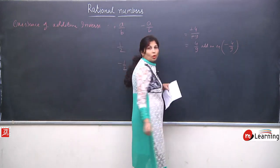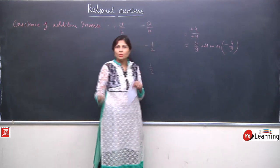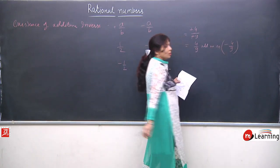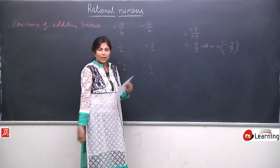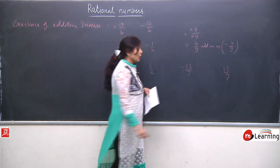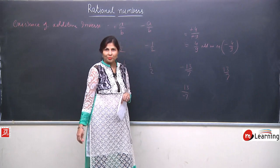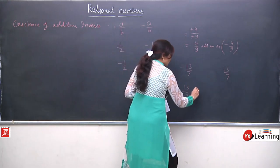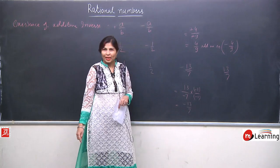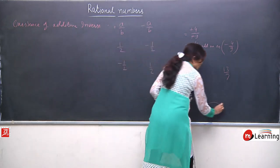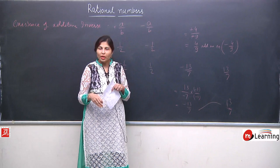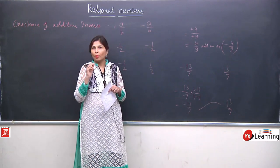Similarly, for 13/(−7), we first convert to standard form: the positive denominator gives −13/7. This is a negative rational number, so its additive inverse is positive 13/7. In general, if I have a/b, then the additive inverse of a/b is −a/b — just the opposite sign.